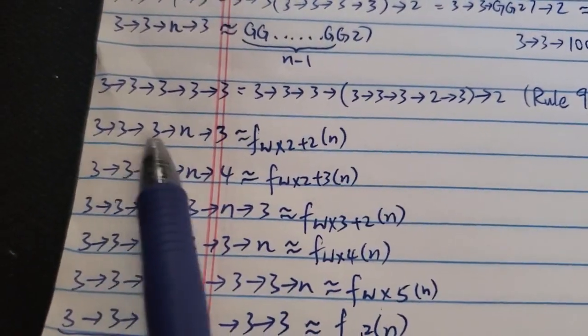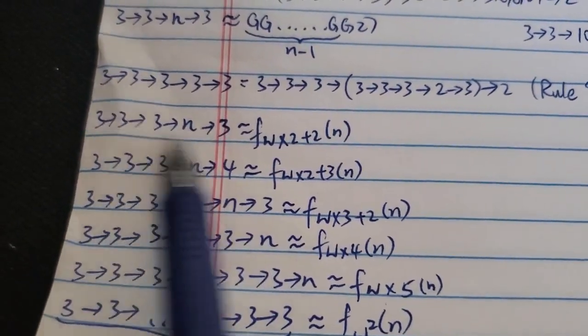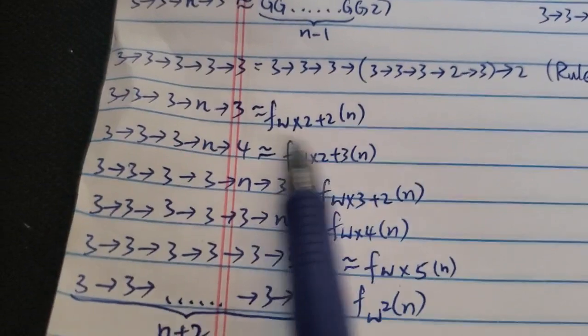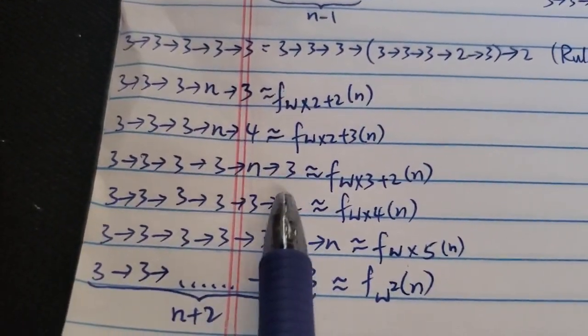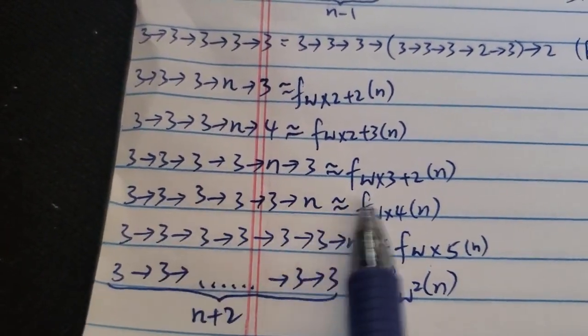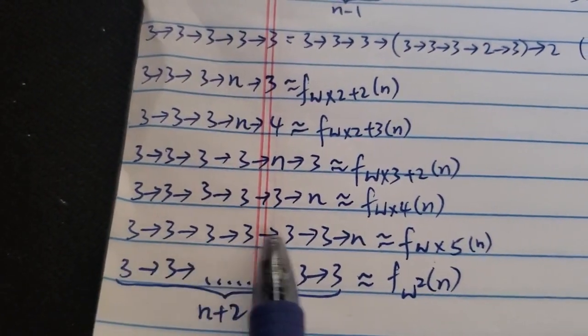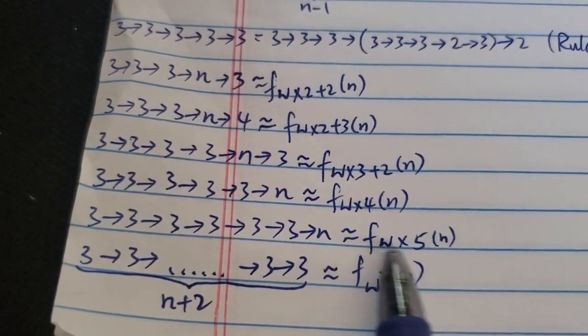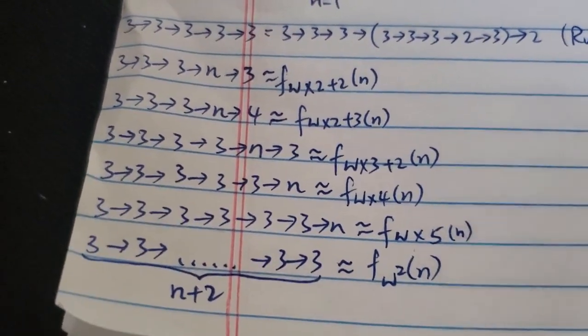And then, so for the general rule, 3→3→3→N→3, this is 5 entries. The growth rate is around f_ω×2+2. Again, feel free to pause the video. You can see the pattern here. So at the end, you can add more entries. So for 1, 2, 3, 4, 5, 6, 7, for 7 entries, something like that, is somewhere around f_ω×5(N) for the growth rate.